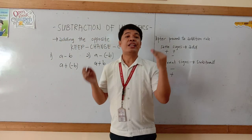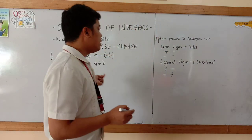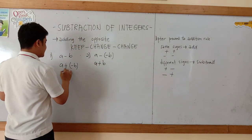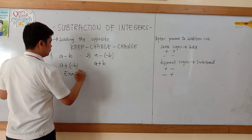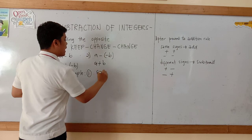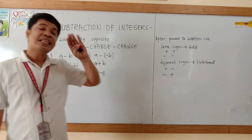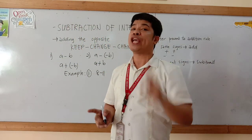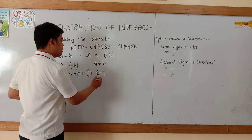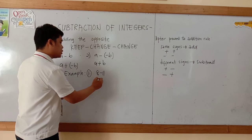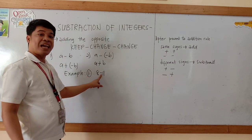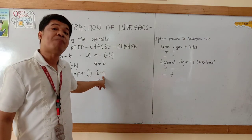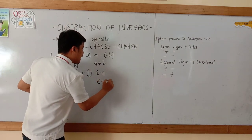Let us try to solve numbers or integers. Number one example, Maka Friendships, is 8 minus 11. Don't forget, we need to follow that method or technique: keep, change, change. So we have here 8 — 8 will be kept, so copy the 8. And then this minus becomes positive. And then after that, we'll also change the 11.